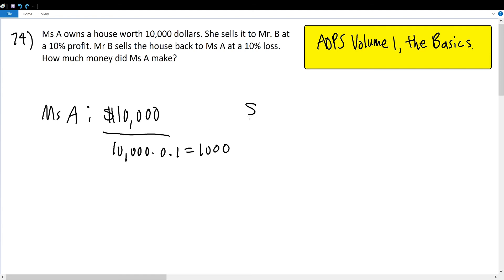She sold it at a $1,000 bonus for herself. So, she sold it at $11,000 to Mr. B. Mr. B now owns the house, and he bought it at $11,000.